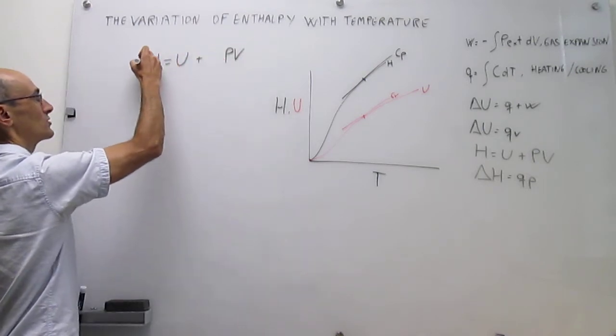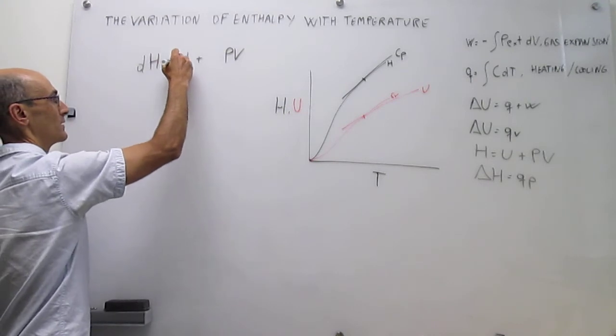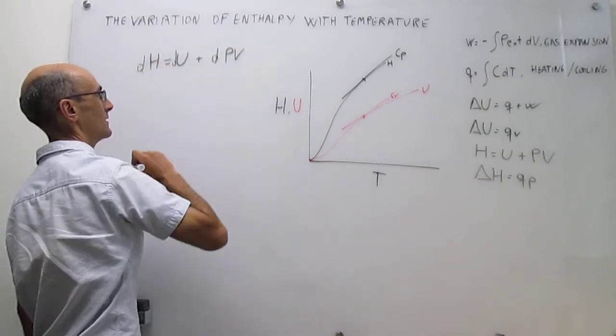So that would be the differential of enthalpy, differential of internal energy, and then differential of PV.